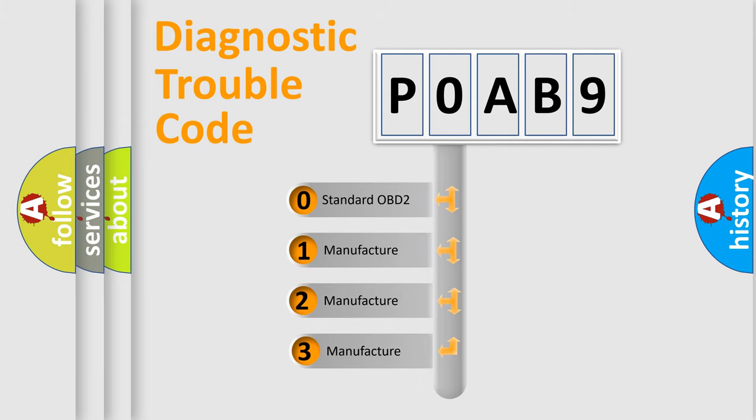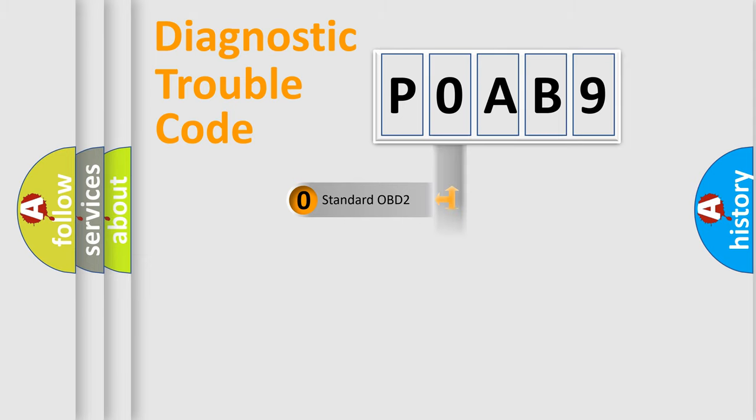If the second character is expressed as zero, it is a standardized error. In the case of numbers one, two, three, it is a manufacturer-specific expression of the car error.